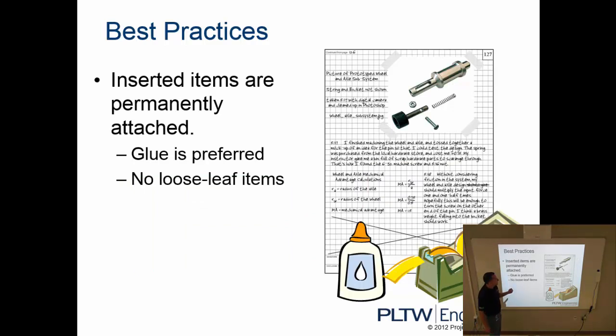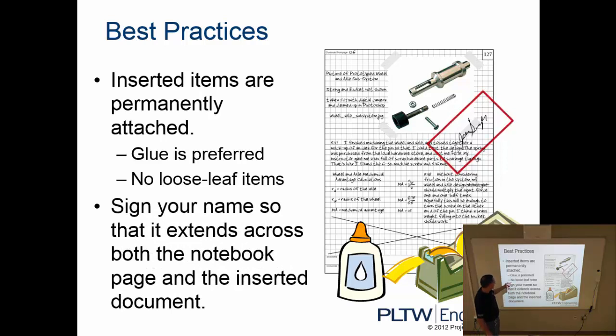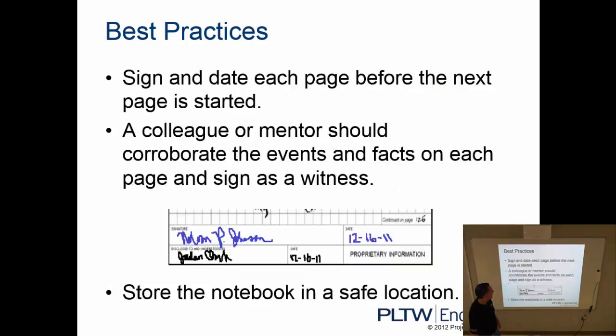If I'm going to add images or pictures into my notebook, I want those to be permanently attached. It shows glue as the preferred method, but we'll more often than not use tape in here. My fear with using the glue is that you have the possibility of gluing pages together. We don't want to do that. If you were to use glue to do this, don't use the wet glue. We use like a glue stick. The wet glue would have a tendency to warp the pages within your notebook. Make sure you sign your name so that it goes across the image or whatever you added in the notebook. It just indicates that you're the one that's added this to your notebook.